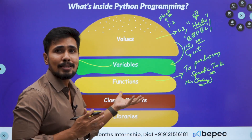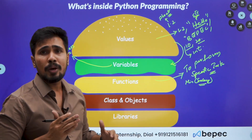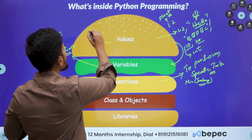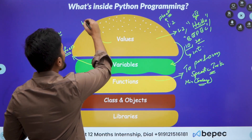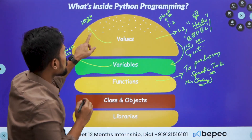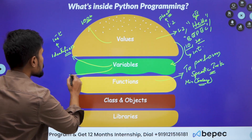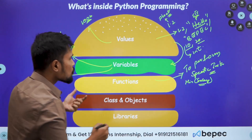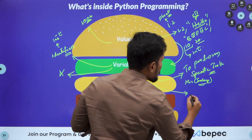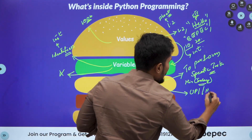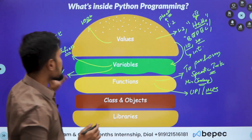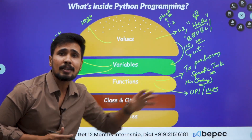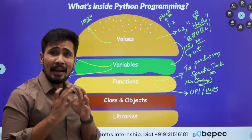Before getting into class and objects, let's look at a real-world example. If I want to send money — say a thousand rupees — that is the value. To whom I want to send is the variable — person X. How I want to send it — using IMPS or UPI — that is the function. So the purpose of a function is to perform a specific task.